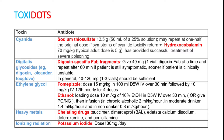Hydroxocobalamin 70 mg per kg can also be given along with sodium thiosulphate. Next is digoxin toxicity or digoxin-like substances — oleander poison, foxglove poison. You can give digoxin-specific Fab fragments. 40 mg can be given as an initial dose. Repeat after 60 minutes with another dose. Some patients may require pacing as well.